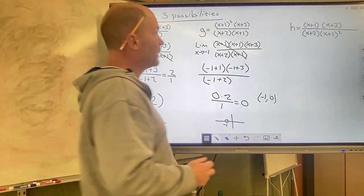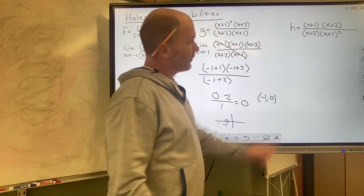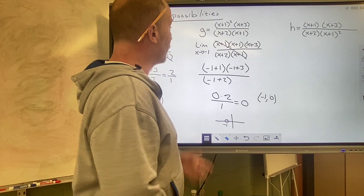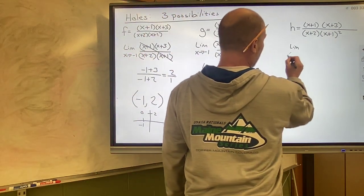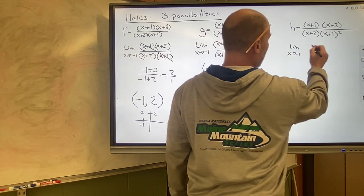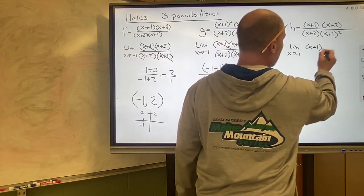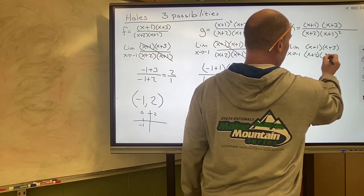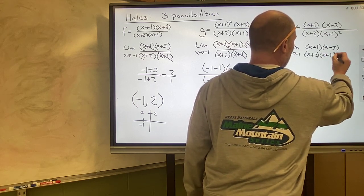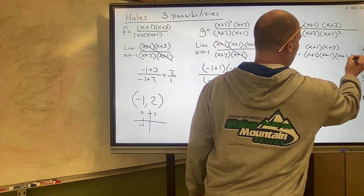The last possibility is something like this, where we have the square on the bottom. So I'm going to do the same thing I did before. I'm going to write it all out. So the limit as x approaches negative 1 of this, x plus 1, x plus 3, x plus 2, x plus 1, x plus 1.